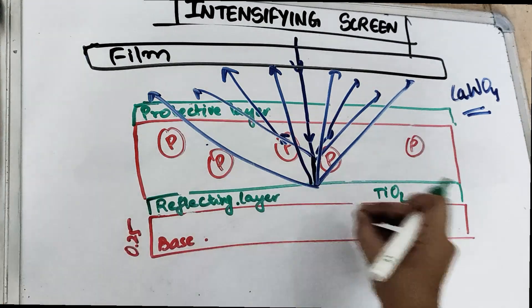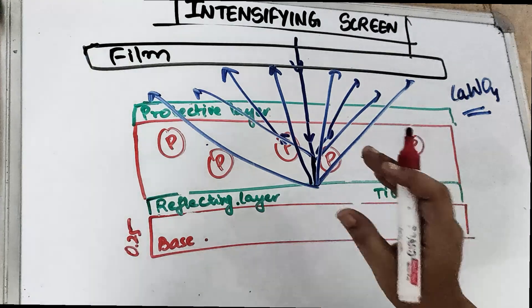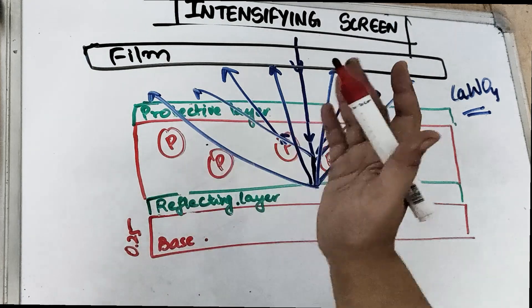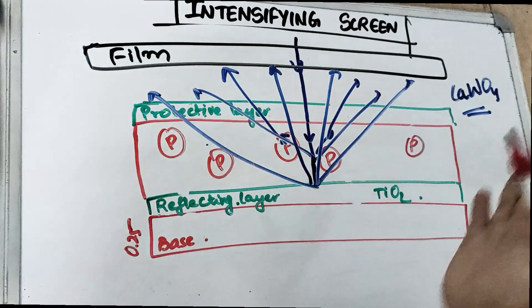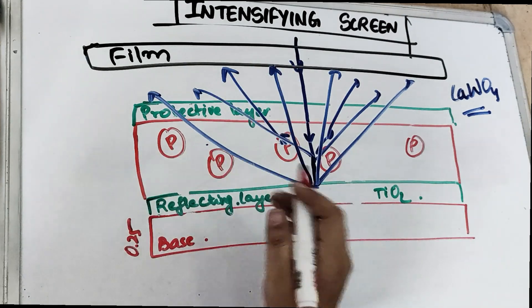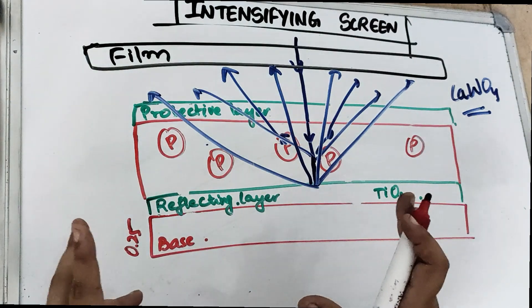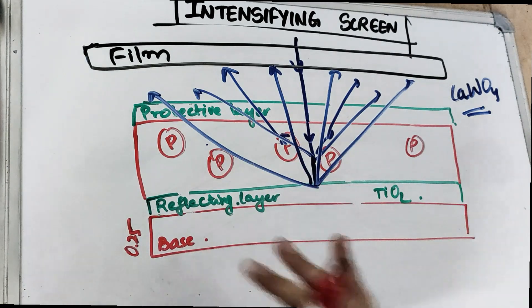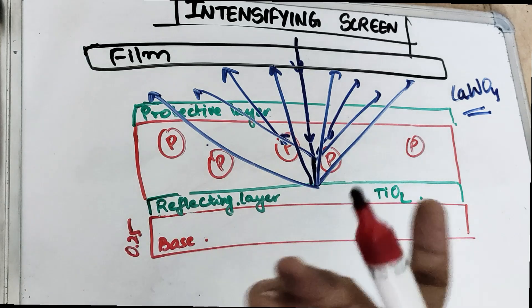The reflecting layer is a very thin layer of titanium dioxide. As we increase the crystal size, the speed of the screen increases. The reflecting layer directs all the light coming — it reflects it back, which increases the sensitivity of the film. But there is a disadvantage: it reduces the sharpness of the image. The clarity of the image is reduced because of this reflecting layer.